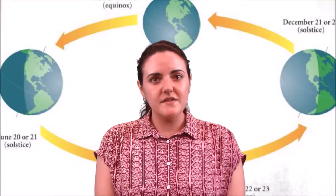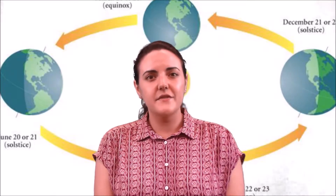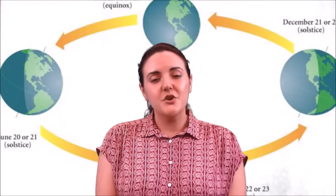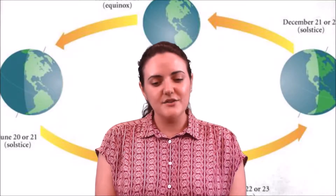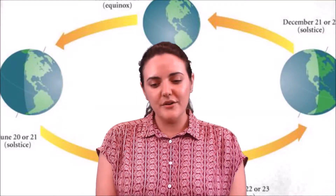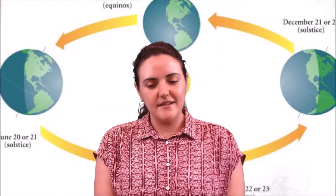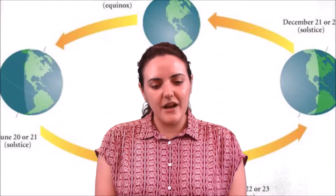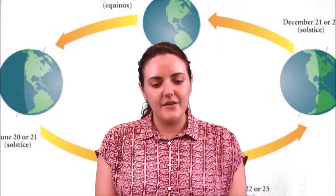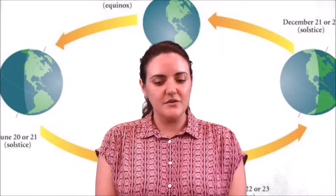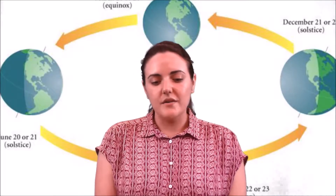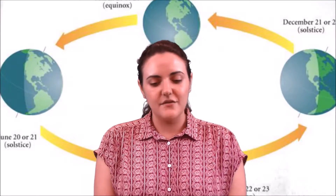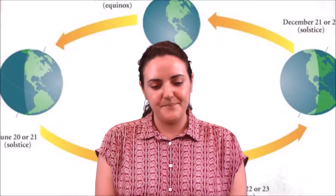Two solstices occur annually around June 21st and December 21st. The term solstice can also be used in a broader sense as the day when this occurs. The day of a solstice in either hemisphere has either the most sunlight of the year — summer solstice — or the least sunlight of the year — winter solstice — for any place other than the equator.